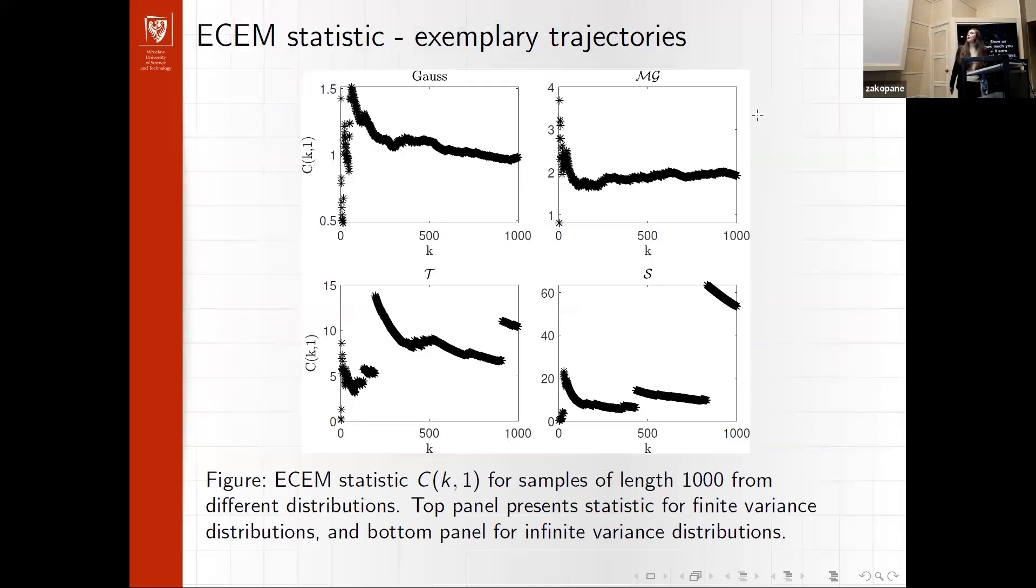In here I will present you some trajectories of the statistics. So in the top row we can see finite variance distributions, these are Gaussian distributions, and we see that the statistics tends to a constant. Meanwhile, for infinite variance distribution we observe chaotic jumps, this chaotic behaviour, and divergence to infinity.